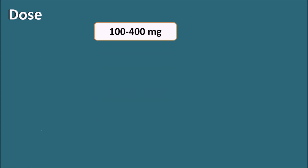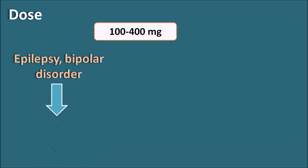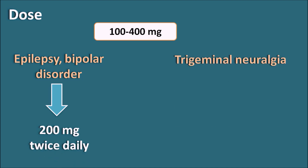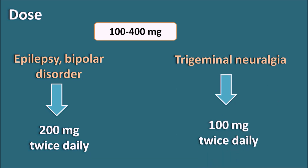The dose may vary from 100 mg to 400 mg depending on the situation. For epilepsy and bipolar disorder, the initial dose is 200 mg twice daily. For trigeminal neuralgia, the dose starts at 100 mg twice daily. These are adult doses. For children aged 6 to 12 years, the dose should be reduced to half the adult dose. For pediatric patients under 6 years, the dose is based on body weight — approximately 10 to 20 mg per kg per day given in divided doses.